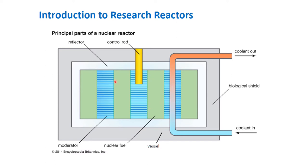We also have the reflector, which minimizes the number of neutrons leaking out of the core, and the control rod, which helps control the neutron population in the core. Of course, the vessel contains all the components. Heat is also produced in the fission process and must be removed, which is provided by the coolant — the coolant comes in and goes into a loop, taking heat out of the core.